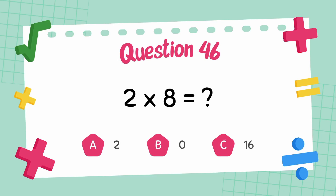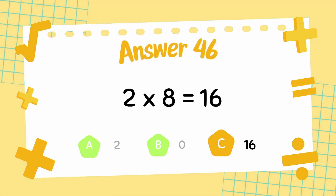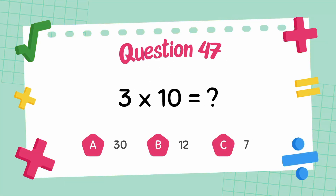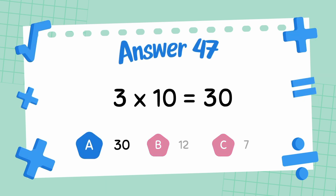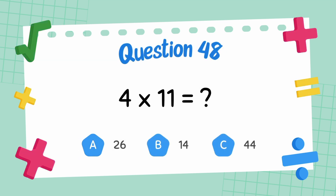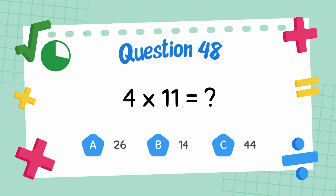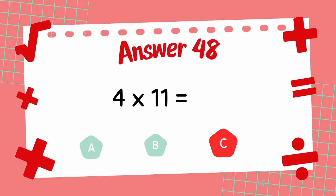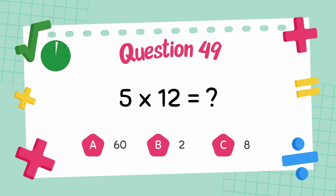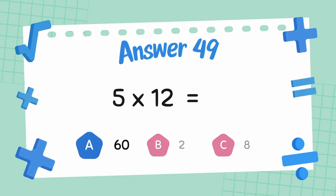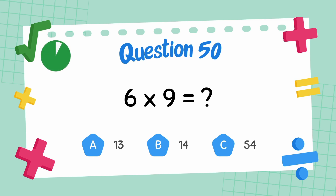What is 2 multiply 8? The answer is 16. What is 3 multiply 10? The answer is 30. What is 4 multiply 11? The answer is 44. What is 5 multiply 12? The answer is 60. What is 6 multiply 9? The answer is 54.